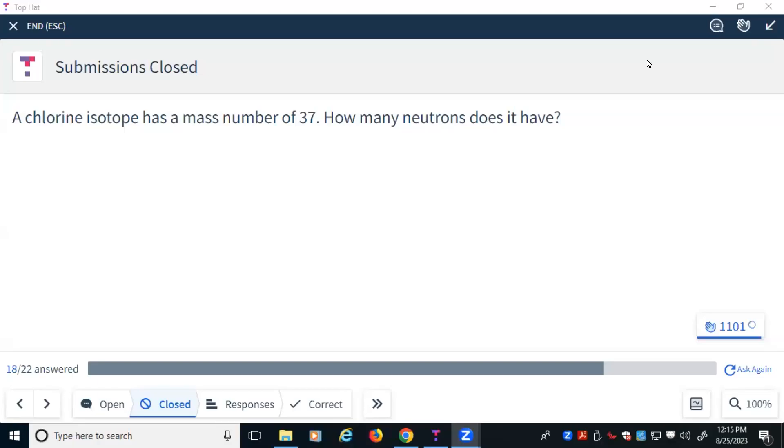So our opening question here was a review question. We've got chlorine, I hope, with a mass of 37. How many neutrons does it have?